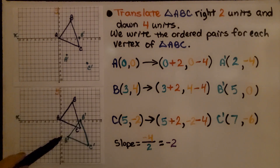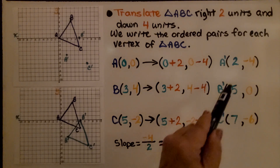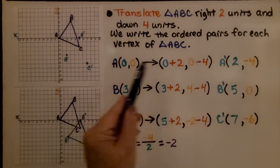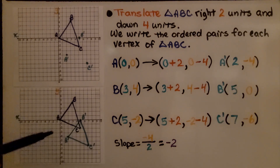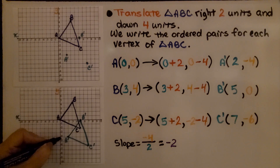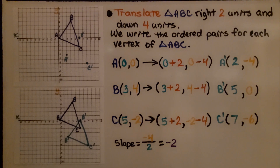We connect all the vertices with line segments and we have translated triangle ABC right two units and down four units. Since vertex A started at the origin and moved to (2, −4), if we wanted to find the slope for this translation — the rise was negative four and the run was positive two — our slope is negative four over two, which simplifies to a slope of negative two.